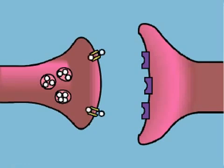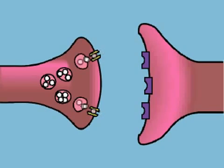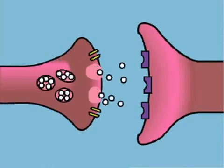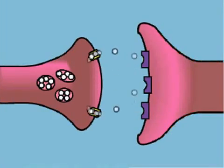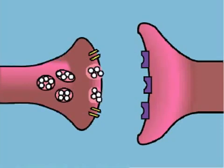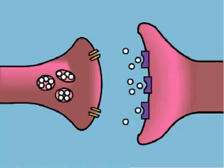The neurotransmitter that is taken back up into the presynaptic neuron is then repackaged into vesicles that can be released the next time an action potential reaches the axon terminal. The entire process repeats each time an action potential reaches the axon terminal of the presynaptic neuron.